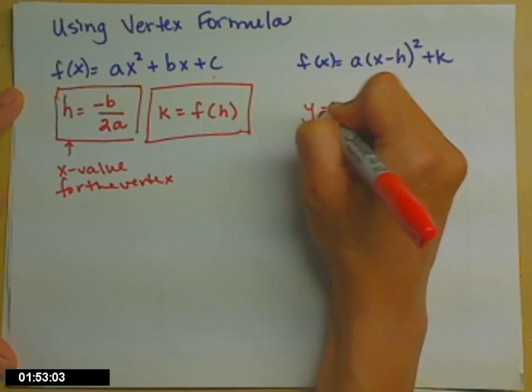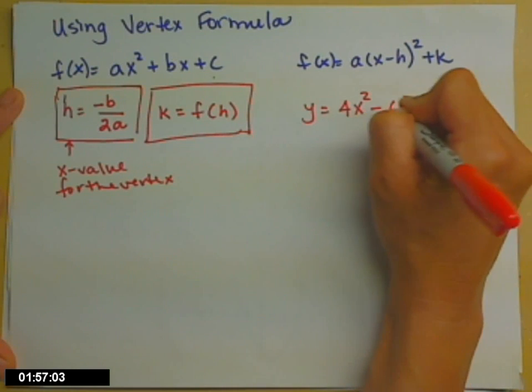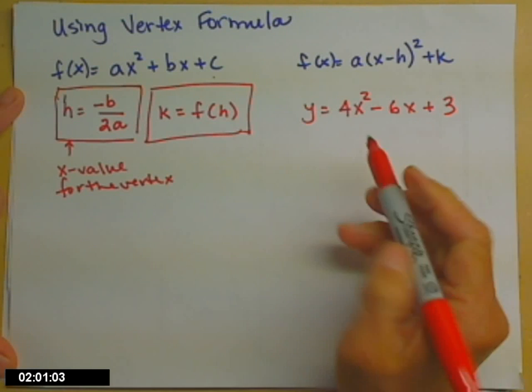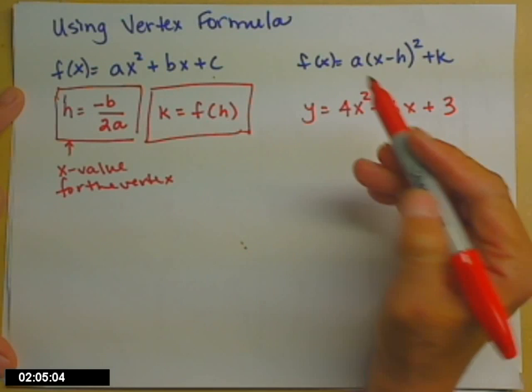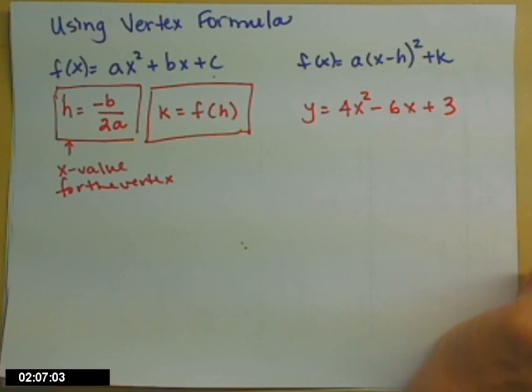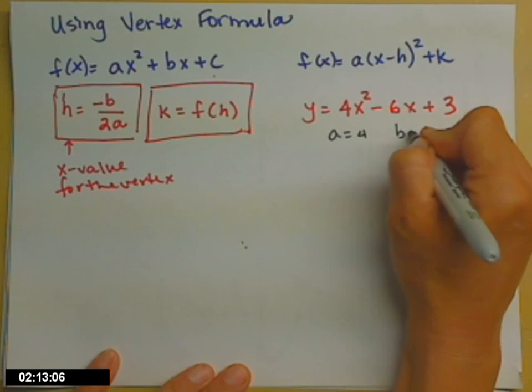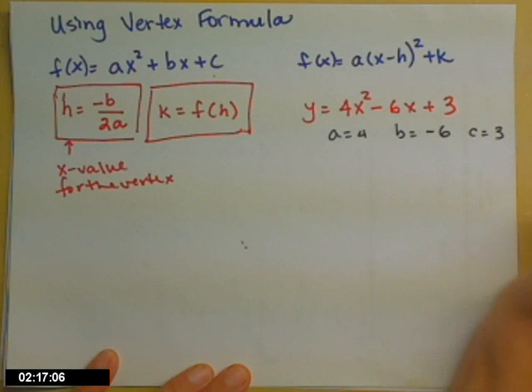Let's do an example. y equals 4x squared minus 6x plus 3. So, we'll realize that we do have a quadratic function. And if I want to know the vertex, I need to figure out what's a, what's b, and what is c. So, a is 4, b is negative 6, and c is 3.